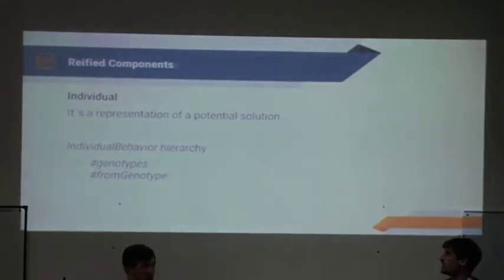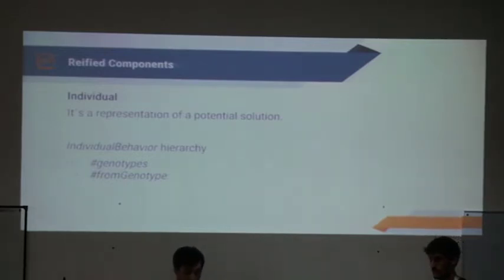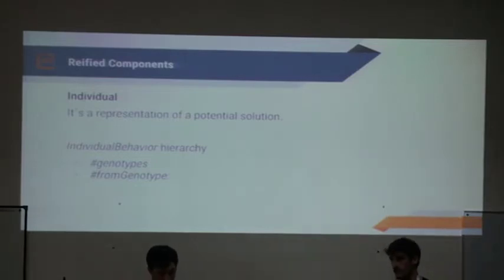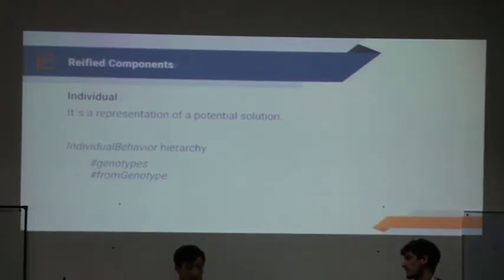The first component is the individual, the possible solution. An individual contains a genotype. A genotype is a collection of genes. A gene is a characteristic of the individual. We create an abstract class and define the individual as the possible solution. We implement two messages: genotypes returns a list of genotypes, and from genotypes creates a new instance of an individual using the list of genotypes.